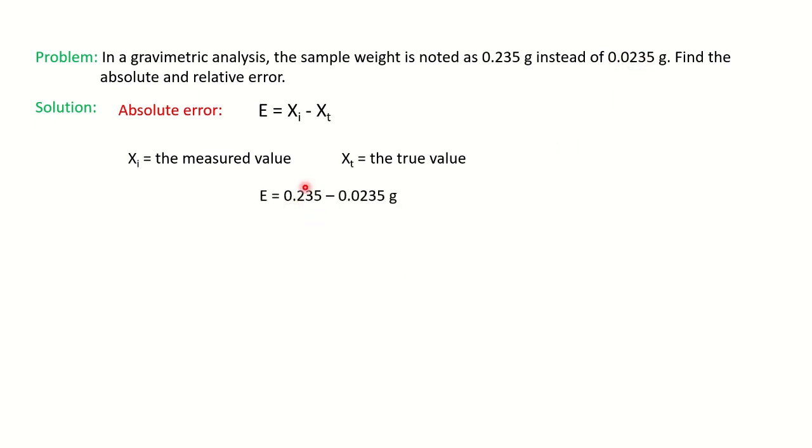We will calculate the absolute error by subtracting the two values: E = 0.235 minus 0.0235, and you will get the answer 0.2115 gram as absolute error.